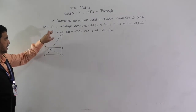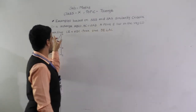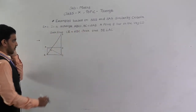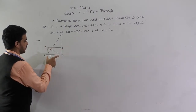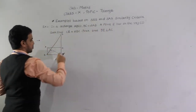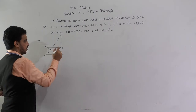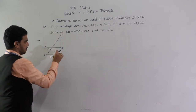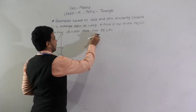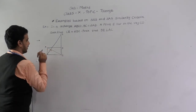Next example: in rectangle ABCD, BC equals 2AB. A point E lies on the ray CD extended such that CE equals 2BC. Prove that BE is perpendicular to AC. We need to draw the figure first. ABCD is a rectangle with BC equal to 2AB. E lies on the ray CD such that CE equals 2BC. We need to show that the angle between BE and AC is a right angle.